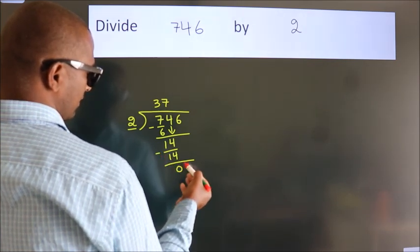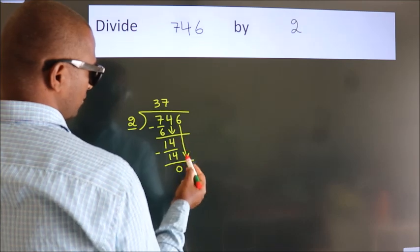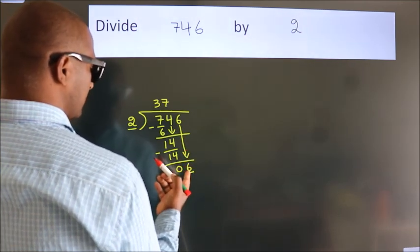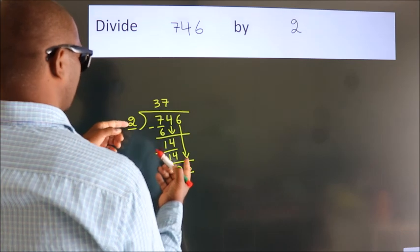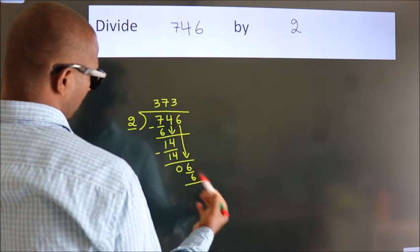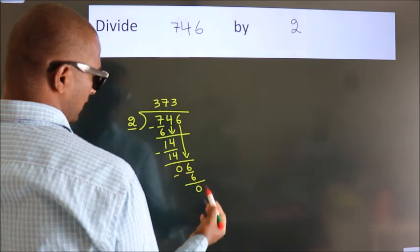After this, bring down the beside number. So 6 down. So 6. When do we get 6 in 2 table? 2 threes, 6. Now we subtract. We get 0.